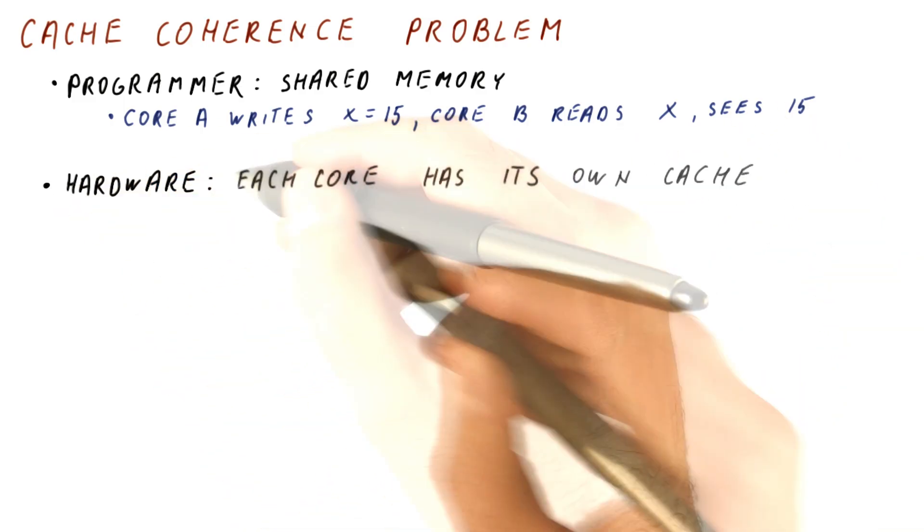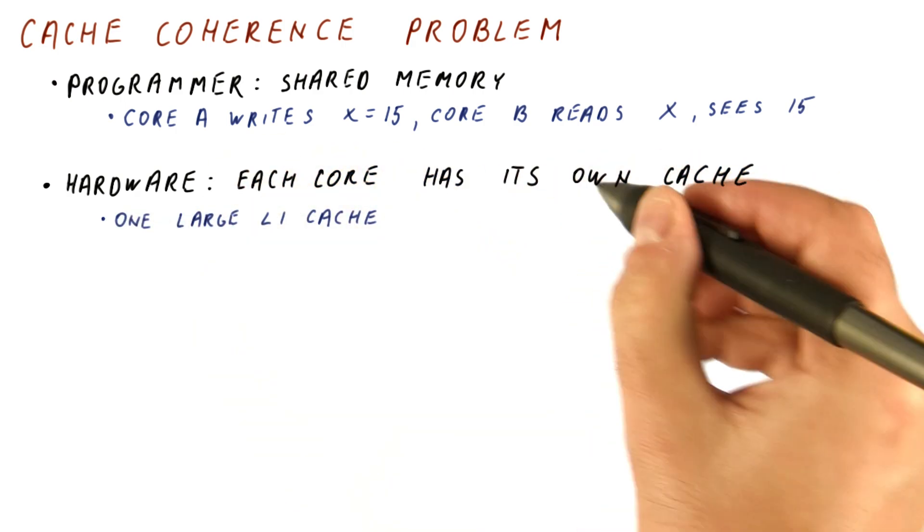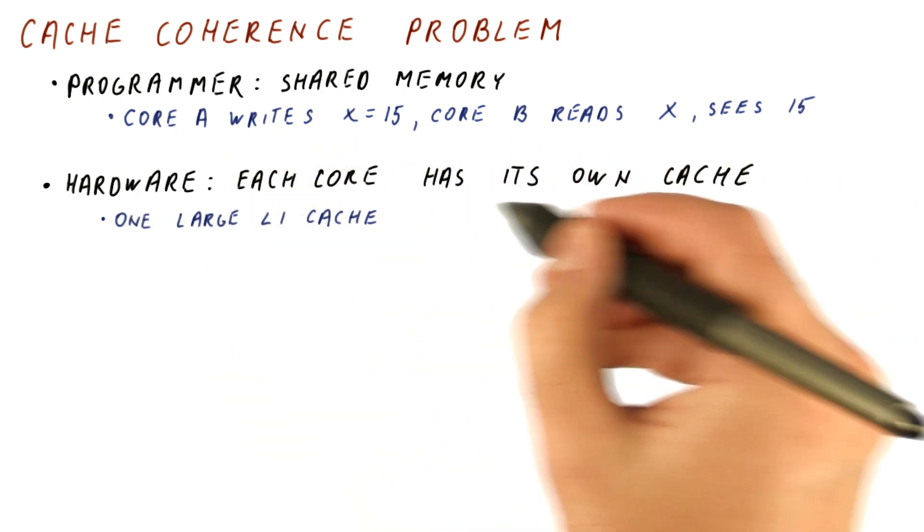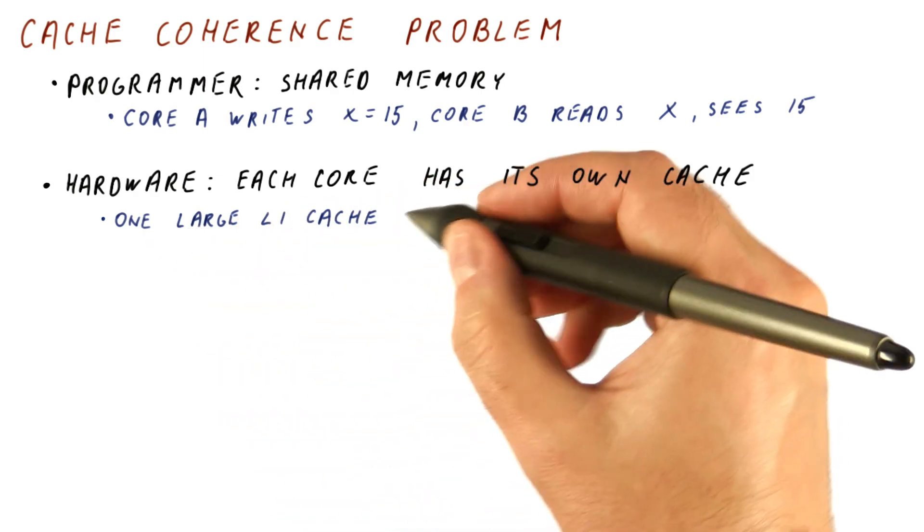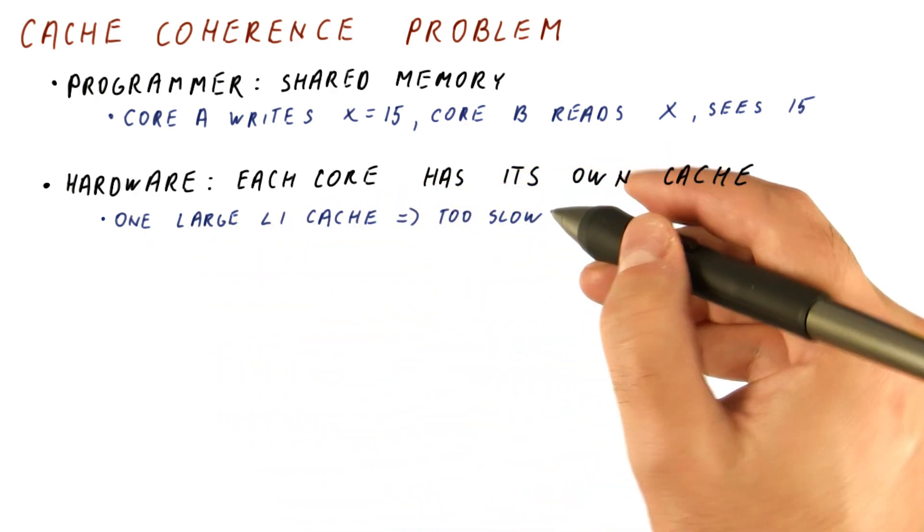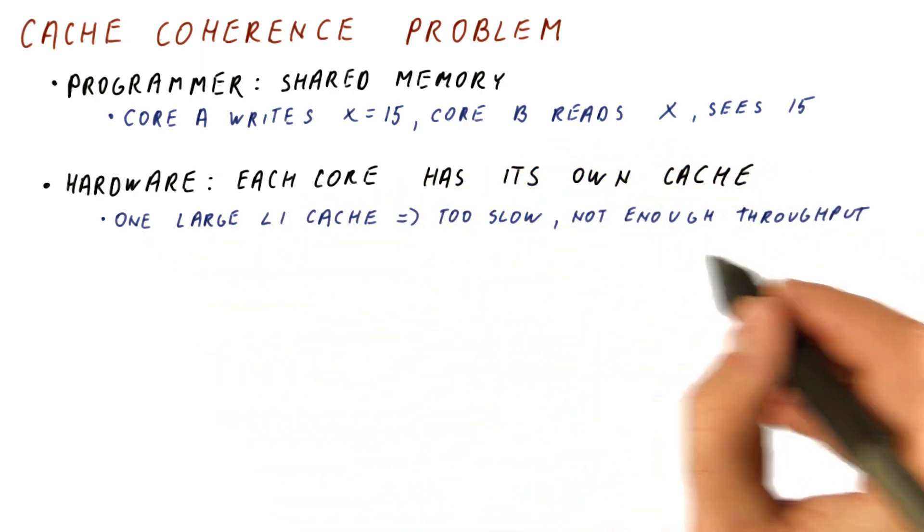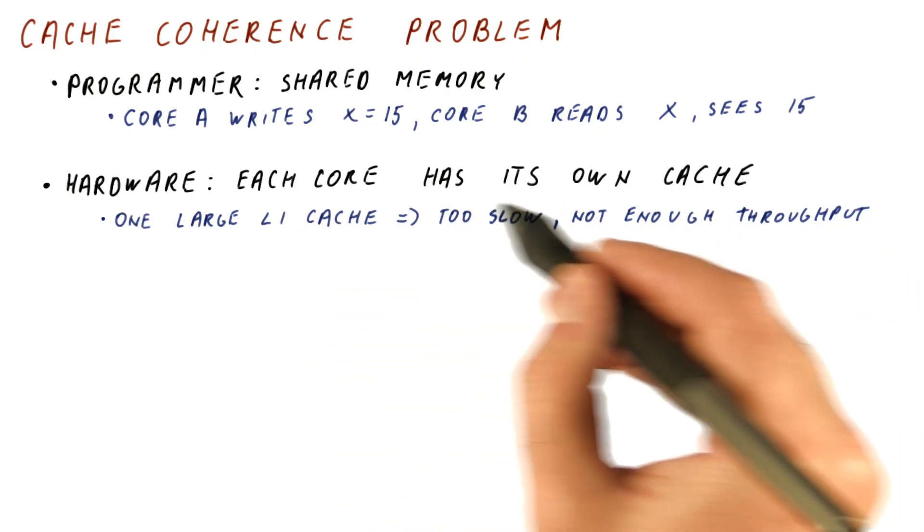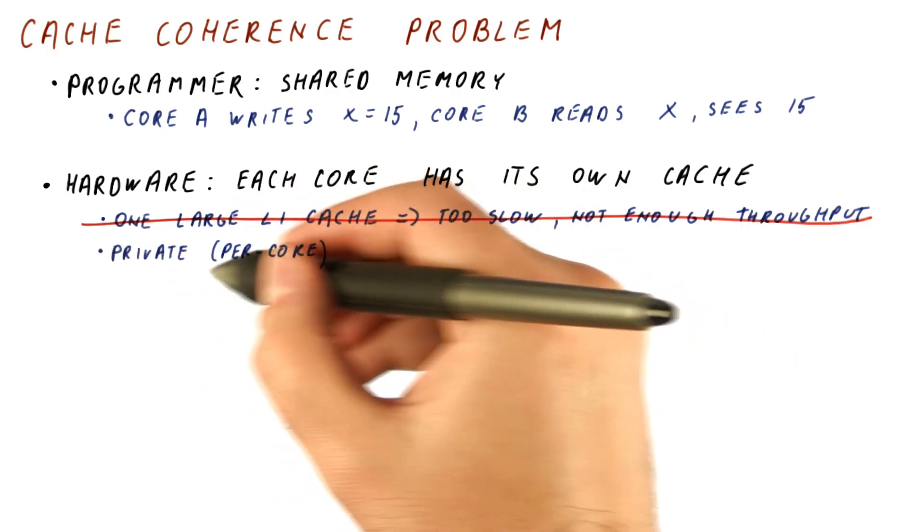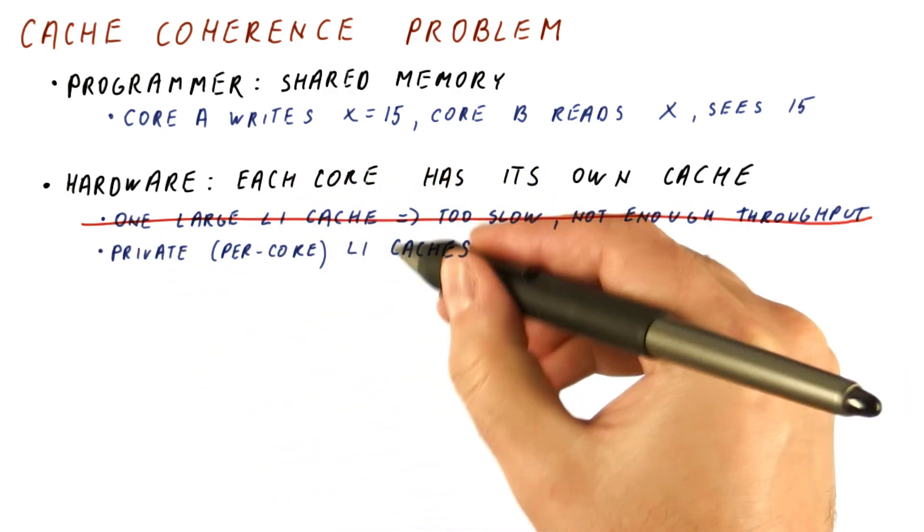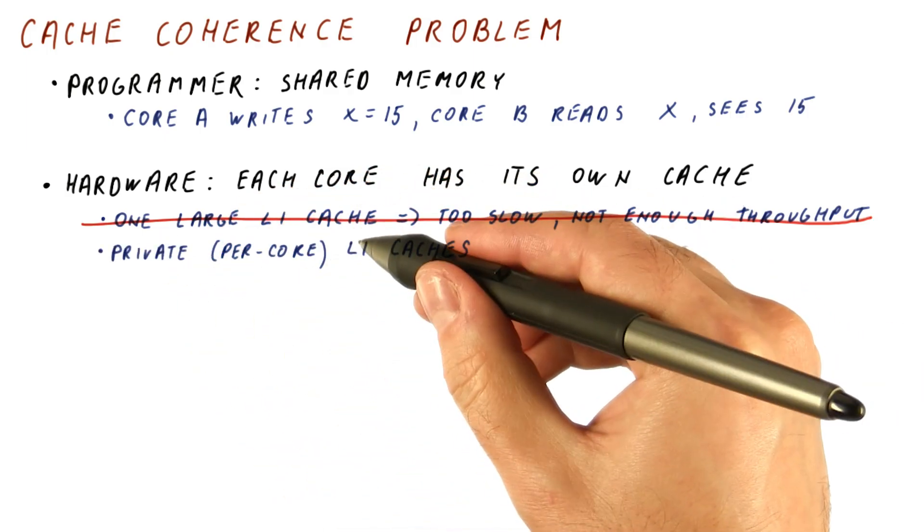But in our hardware, each core has its own cache. And we need cores to have their own caches at least in the level one, because a single large level one cache would be too slow and would not have enough throughput to keep up with the requests from all of the cores. So because we cannot do this, we have private or per-core L1 caches.